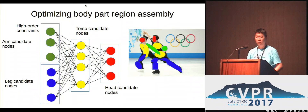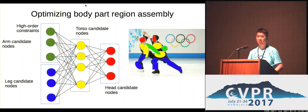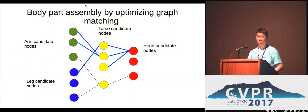Essentially, assembling the regions into body parts and then into human instances is a kind of graph matching problem. In this graph, each node indicates some kind of region candidate for the body parts, and the linkage indicates the potential association between these body parts. Beyond this, we also need some kind of high-order constraints so that we have some structure when we do the assembly. After matching, we can partition the graph into connected components, where each connected component indicates a human instance.